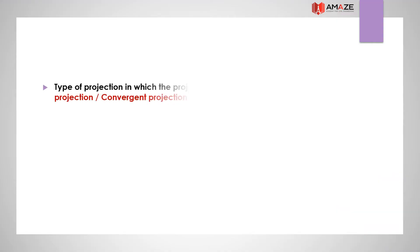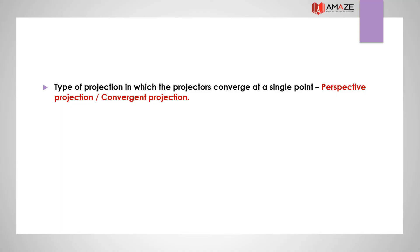A type of projection in which the projectors converge at a single point is called perspective projection or convergent projection. When projectors are parallel it is parallel projection; when they converge at a single point it is perspective or convergent projection.